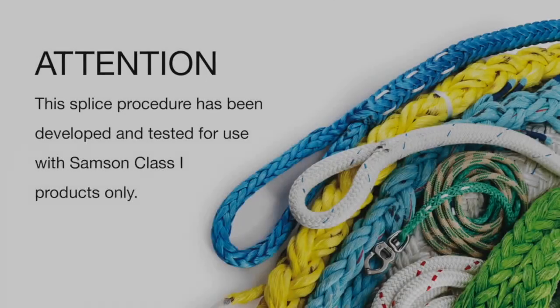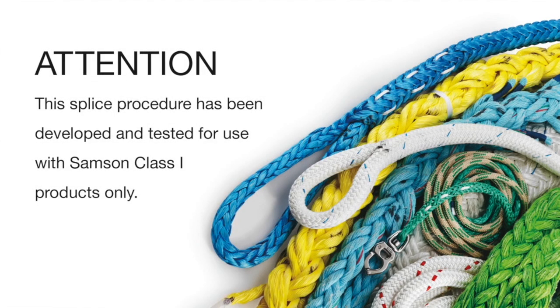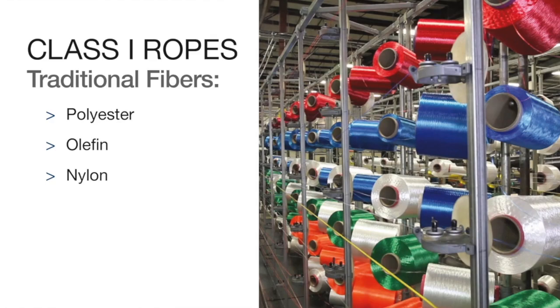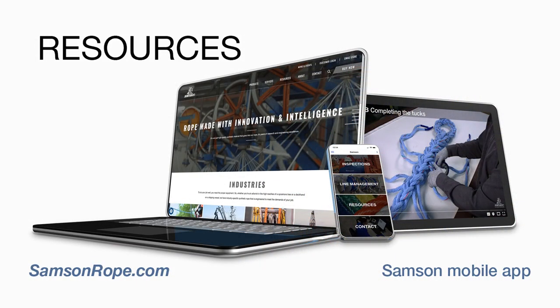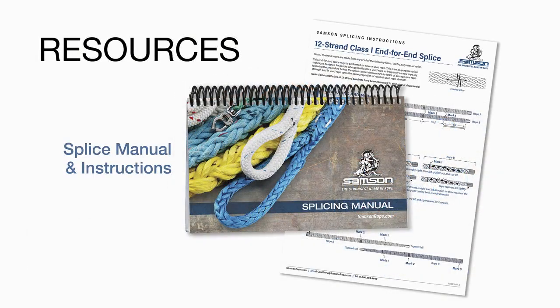This splice procedure has been developed and tested for use with Samson Class 1 products only. Class 1 ropes are produced with traditional fibers: polyester, olefin, or nylon fiber. Instructions for this splice can be downloaded as an Acrobat PDF file from samsonrope.com and are also available in print form in the Samson splicing manual.